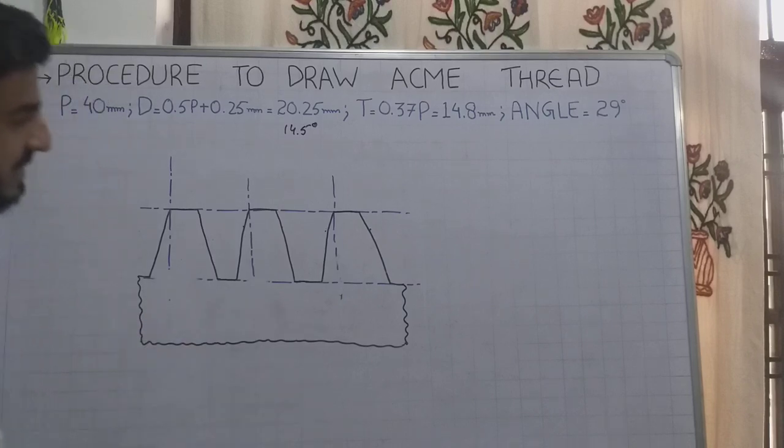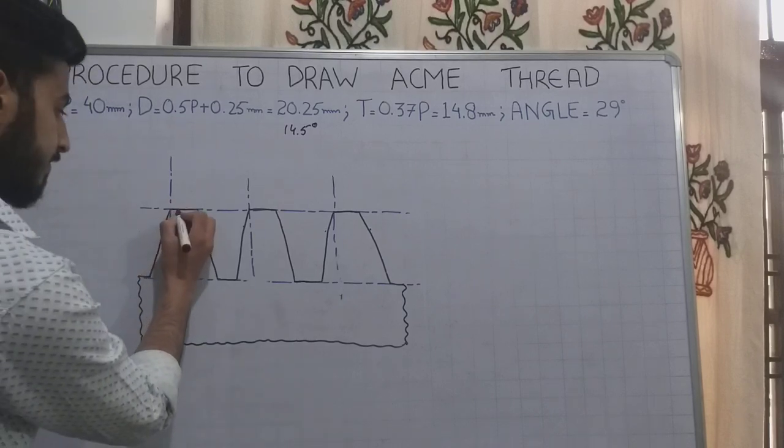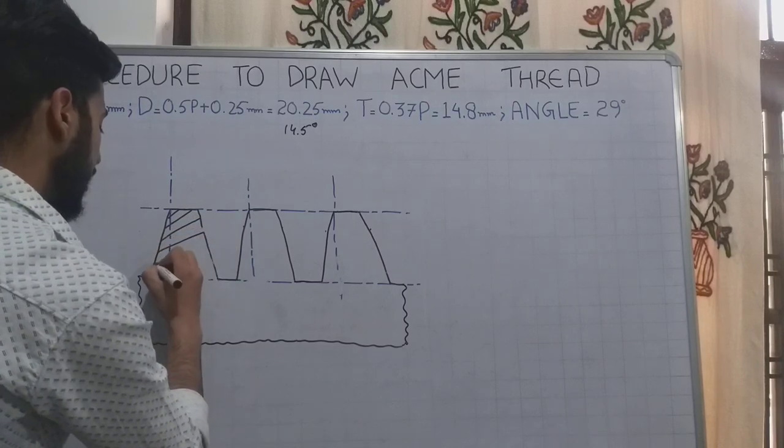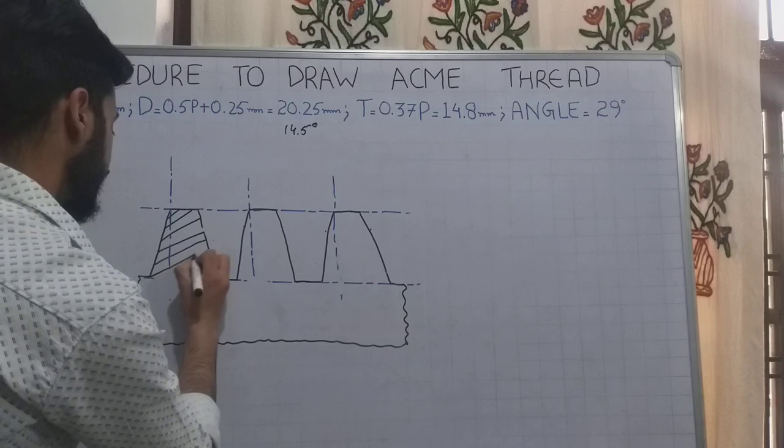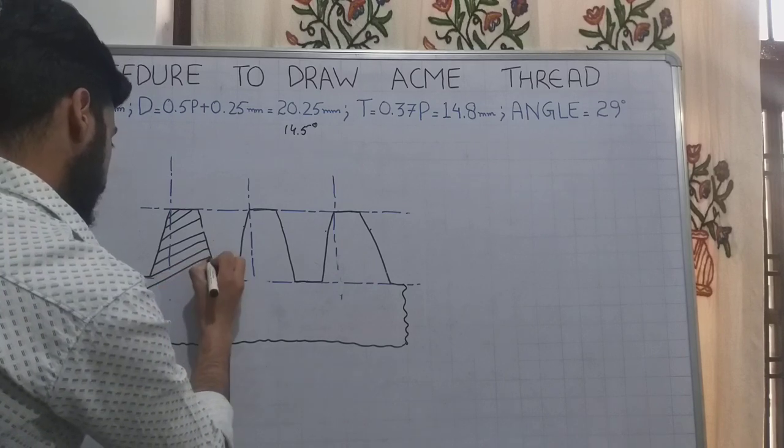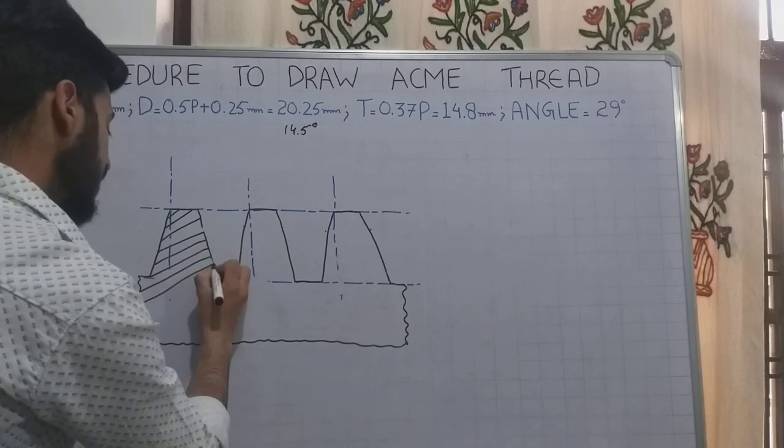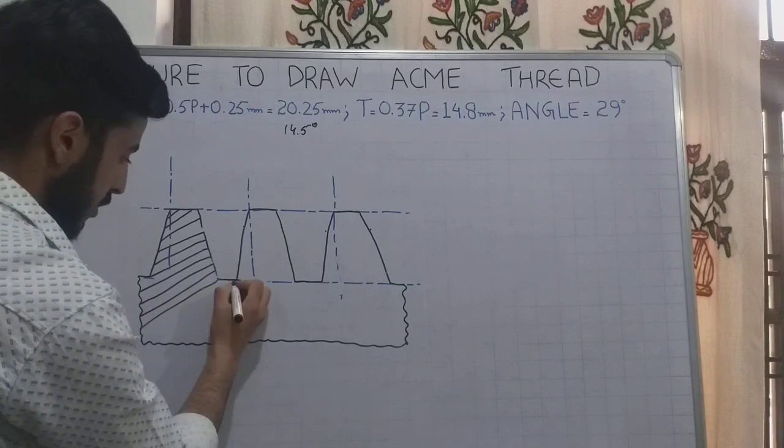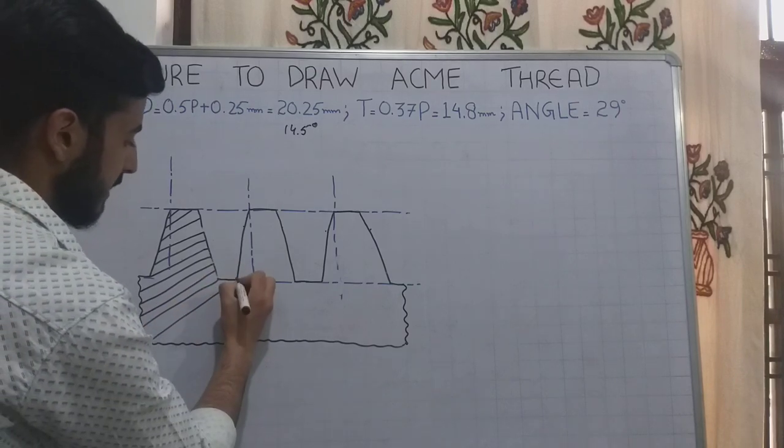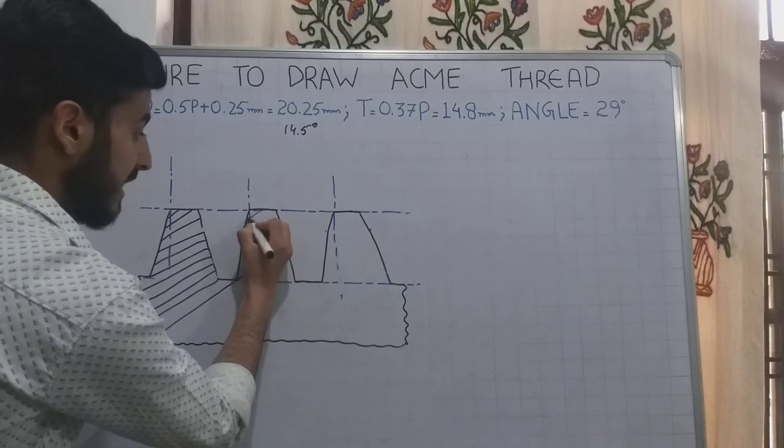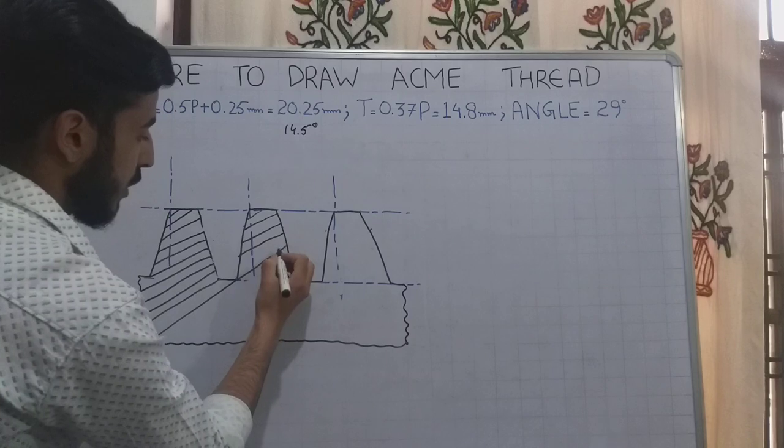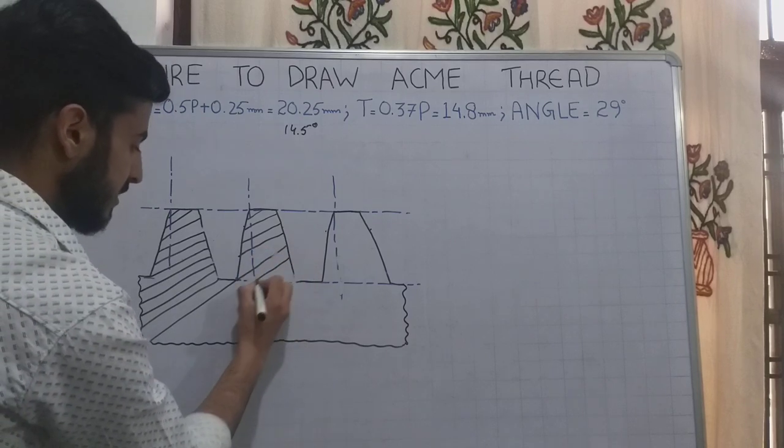After this, I need to do the hatching of this thread. Hatching lines are drawn at an angle of 45 degrees. If I need perfect hatching lines, I can use a ruling scale. Hatching lines should be equidistant, not far apart or too close, the distances should be equal.